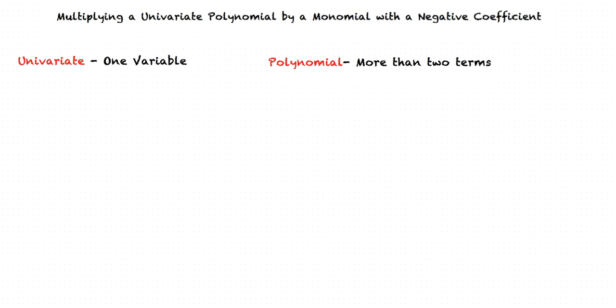The term univariate means that there is only one variable and the term polynomial means that there are more than two terms in the expression. Monomial means that there is only one term and we are going to consider the problems where the coefficient is negative.